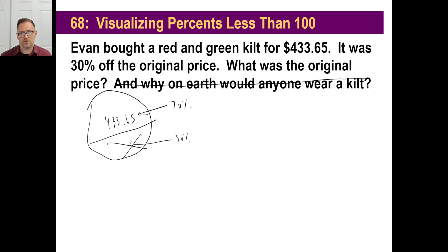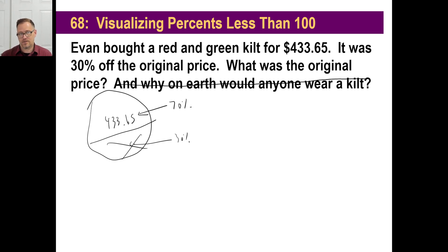So $433.65 represents 70% of the original price. Pause and try to write the sentence yourself. The sentence is: $433.65 is 70% of what? That's all there is to it.